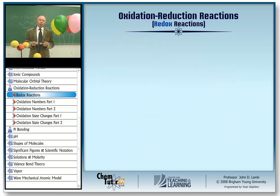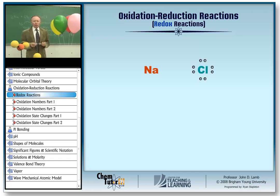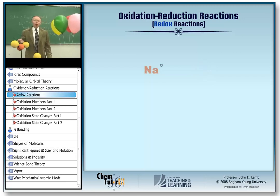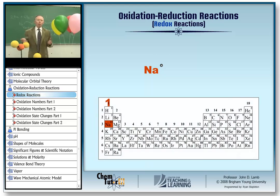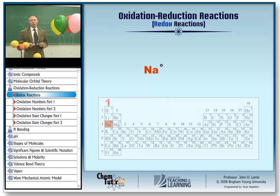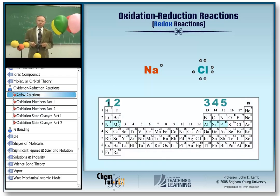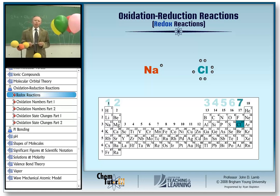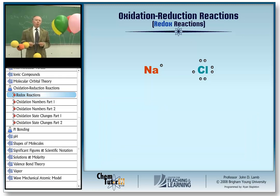A simple example of redox reactions is shown on the screen right now. We have a metal atom, sodium, which is an alkali metal and therefore has one valence electron. And we have an atom of the halogen, chlorine, with its seven valence electrons. To obey the octet rule, the sodium atom will give up its valence electron to the chlorine atom. In redox terms, this represents a transfer of the electron from sodium to chlorine.